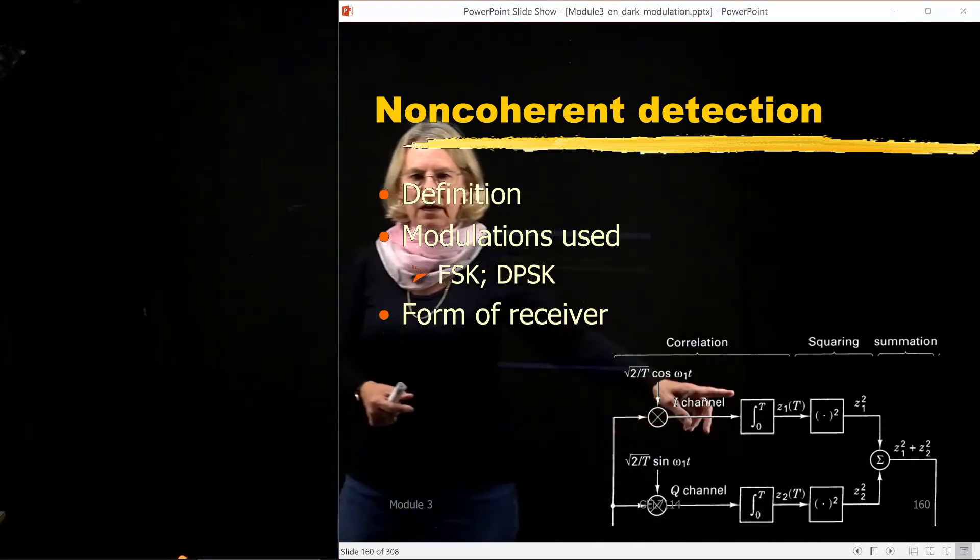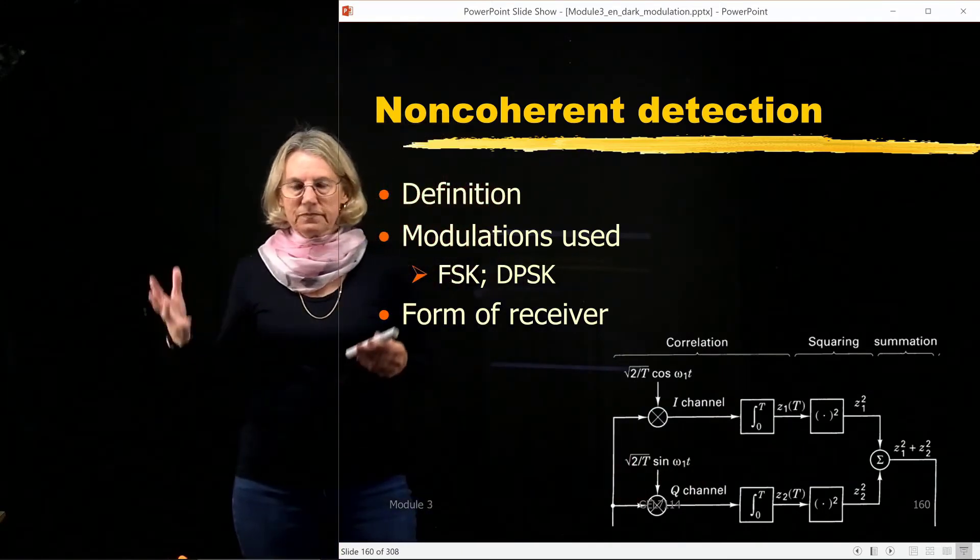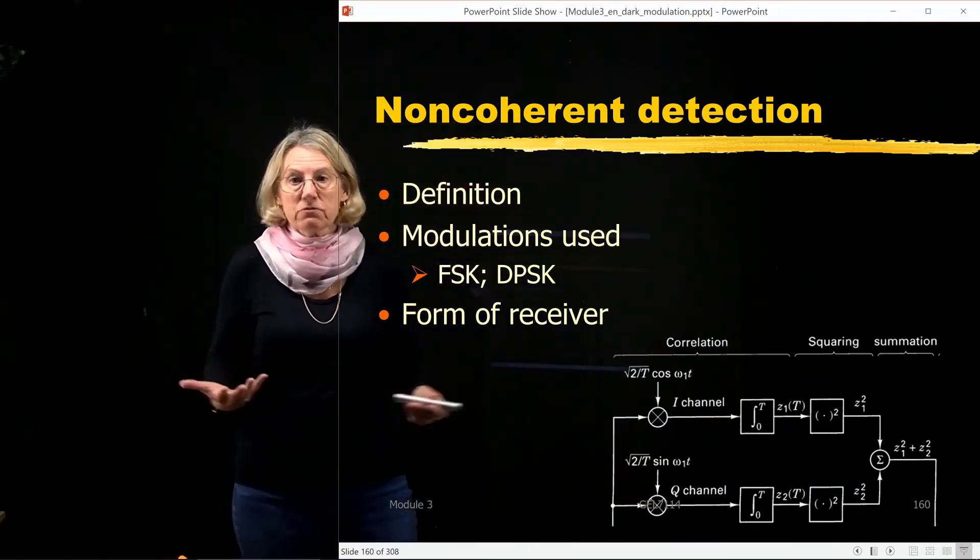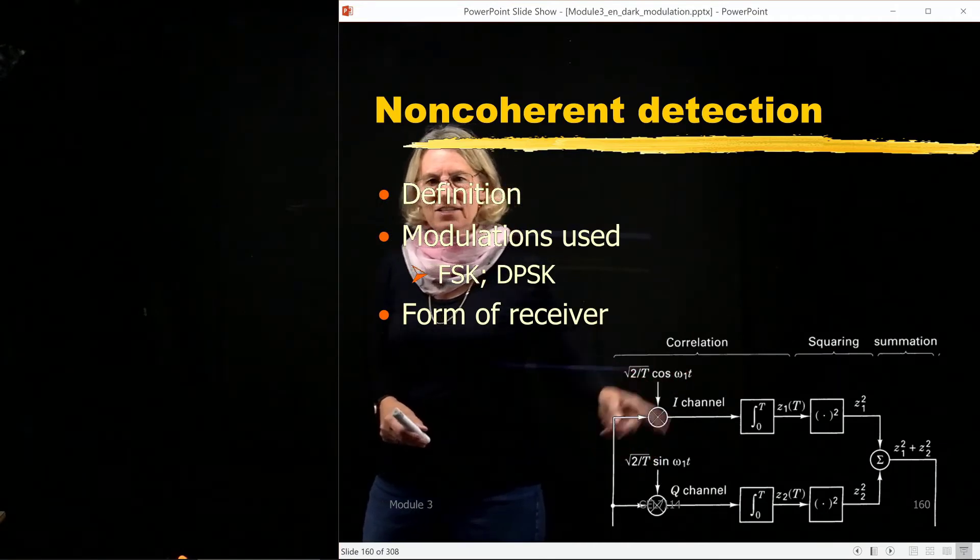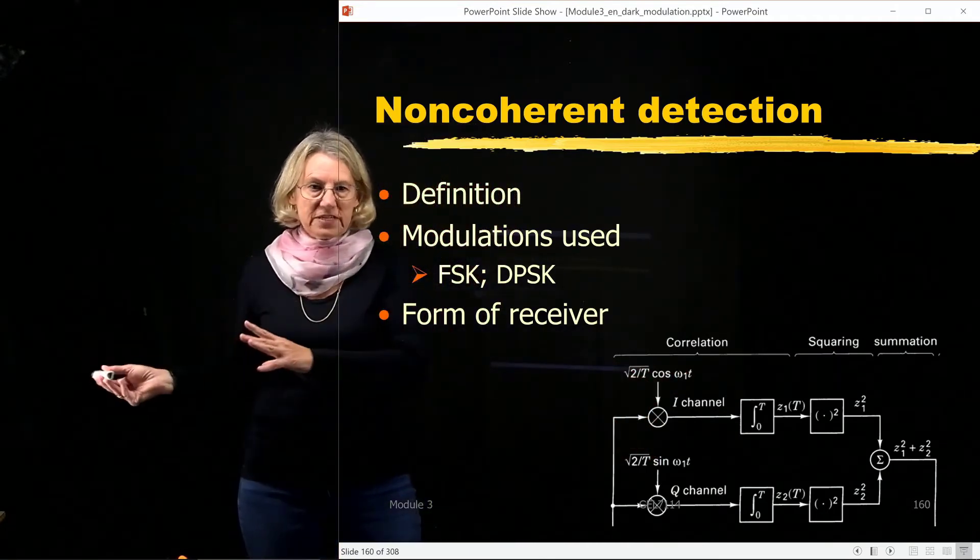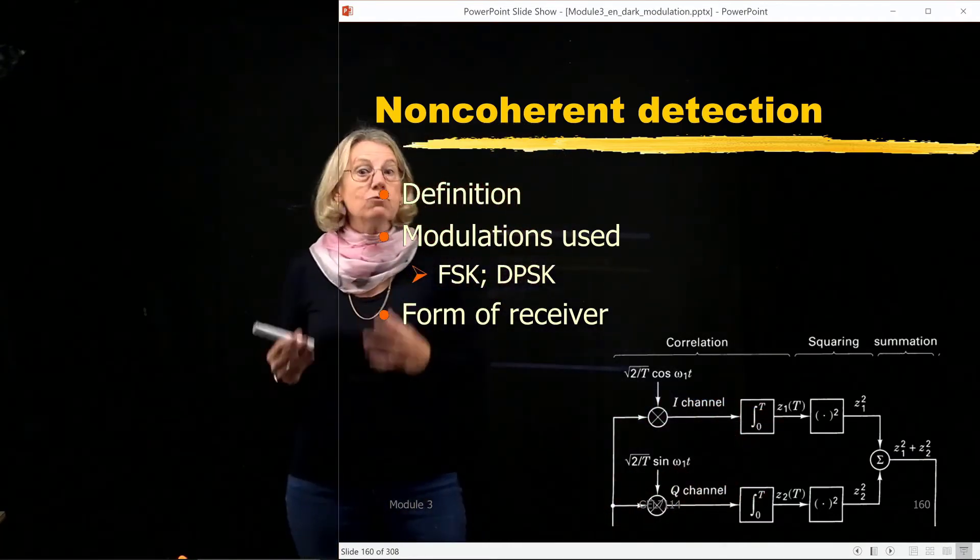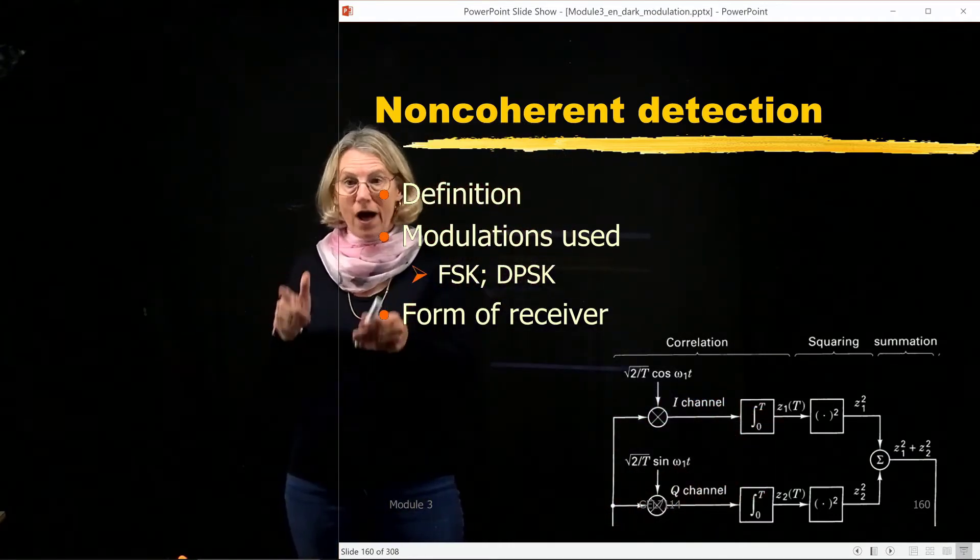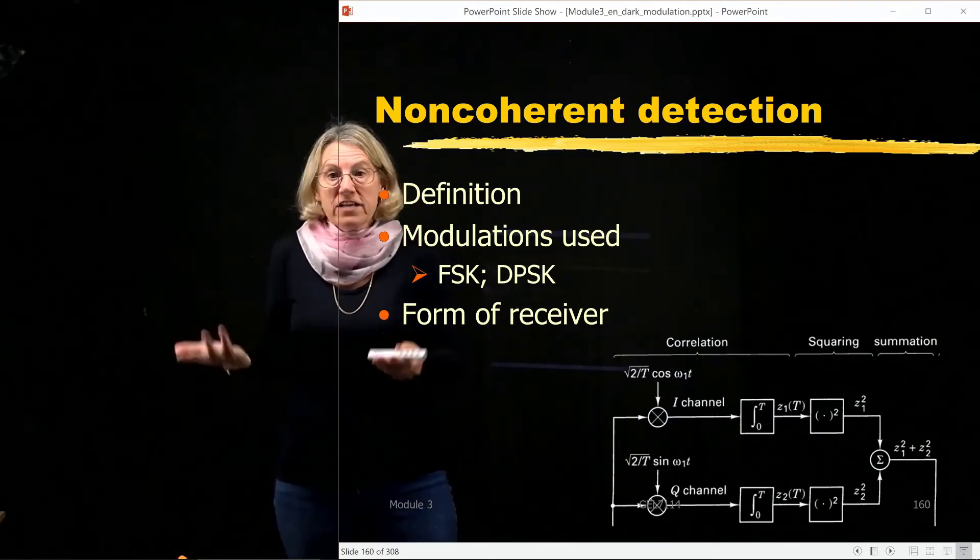We would do something that looks very similar, maybe a demodulation. So we're trying to use the same approach. But because the phase could be different between the transmitter and the receiver, when I get out, these statistics are no longer going to be useful in themselves. So what we do with non-coherent detection in one case, for instance, we could take these terms out of the correlator and square them, square them and add them.